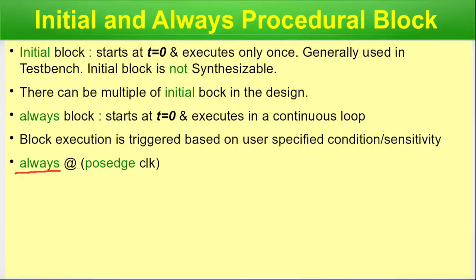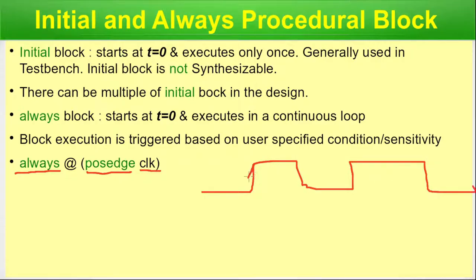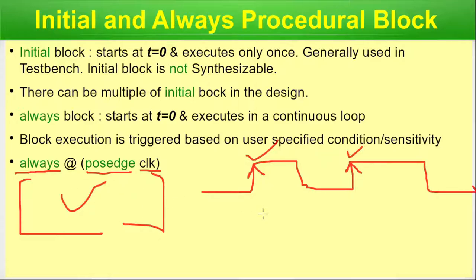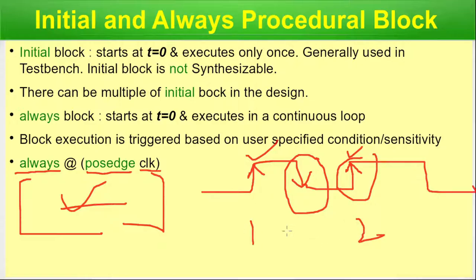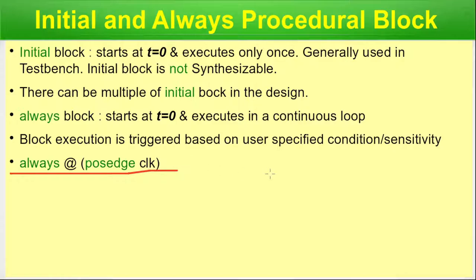Here is an example: always @(posedge clock). The 'always' keyword is written in green as a reserved keyword. At each posedge, the always block will be sensitized and whatever is written inside will be executed. At the next posedge it executes again. If anything changes on the negative edge, it will get reflected at the next posedge. Hence the always block is very useful for hardware description.